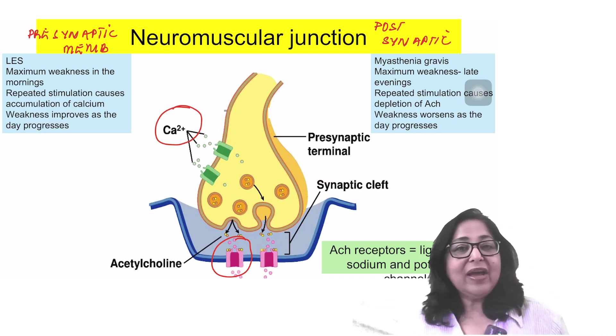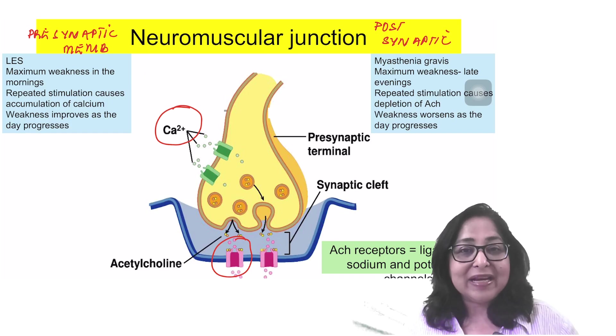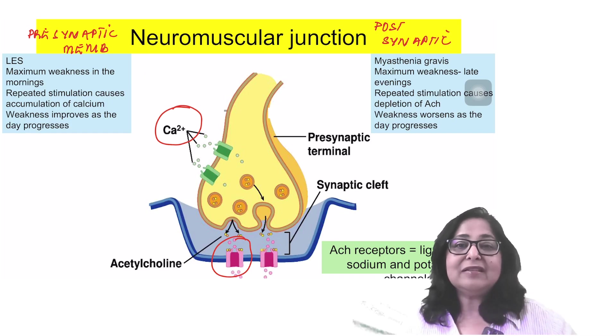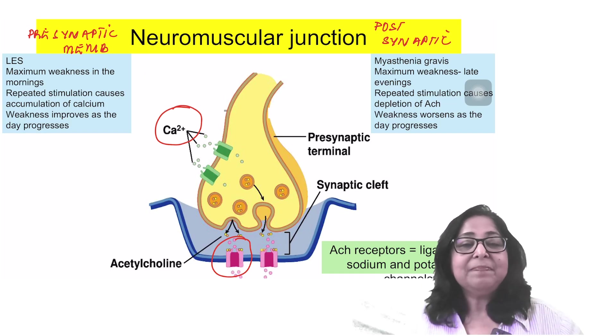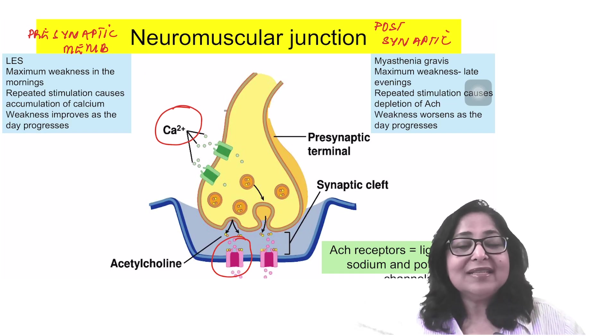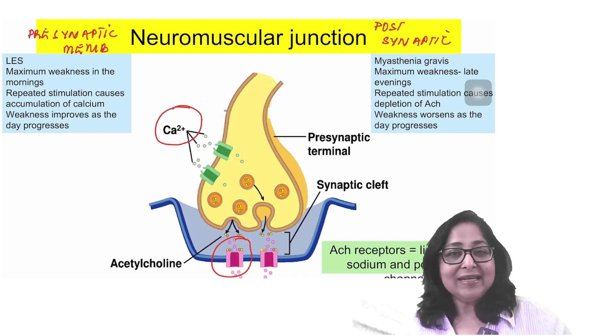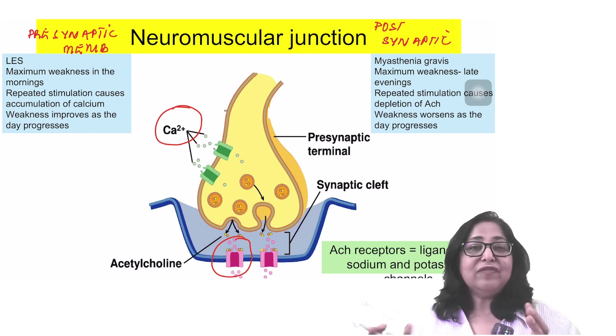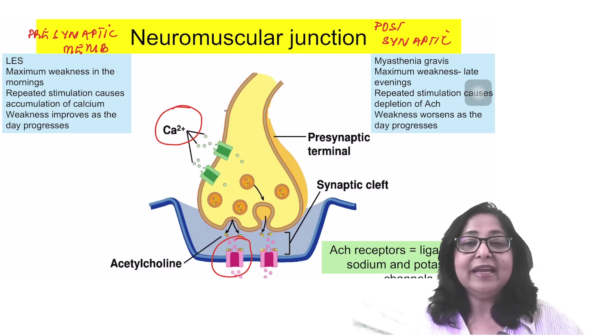Whereas in the case of myasthenia gravis, when he gets up in the morning he feels okay, but as the day progresses his weakness worsens. This is because repeated stimulation causes release of acetylcholine and therefore a depletion of acetylcholine towards the end of the day. What can cause an improvement in his symptoms? Rest or by using drugs such as anticholinesterase. Cholinesterase is an enzyme which degrades acetylcholine in the synaptic cleft. So if I use a drug which blocks this enzyme, it will cause a local increase in acetylcholine, improving the symptoms.